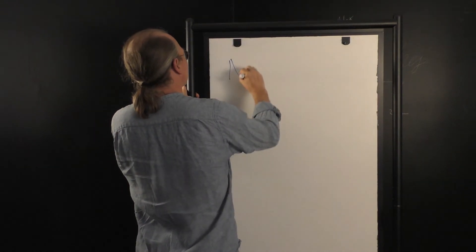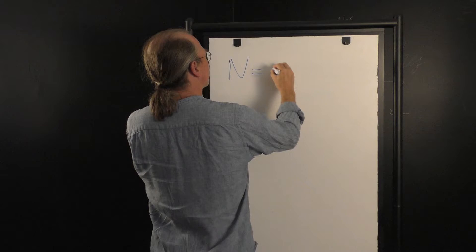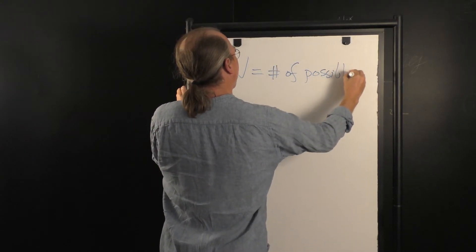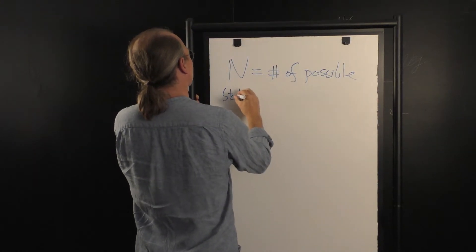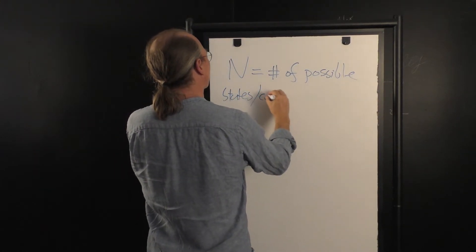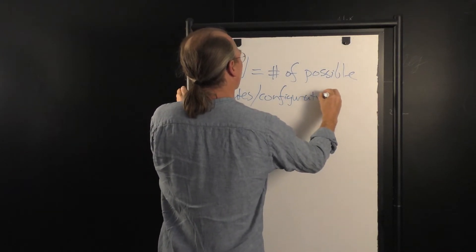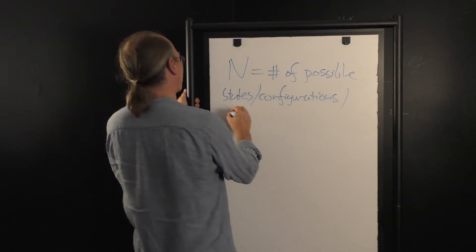let's let N equal the number of possible states or configurations, or as Boltzmann very nicely put it, complexions